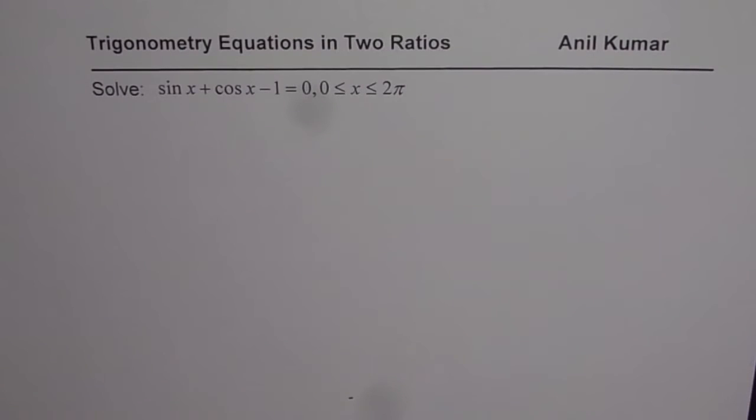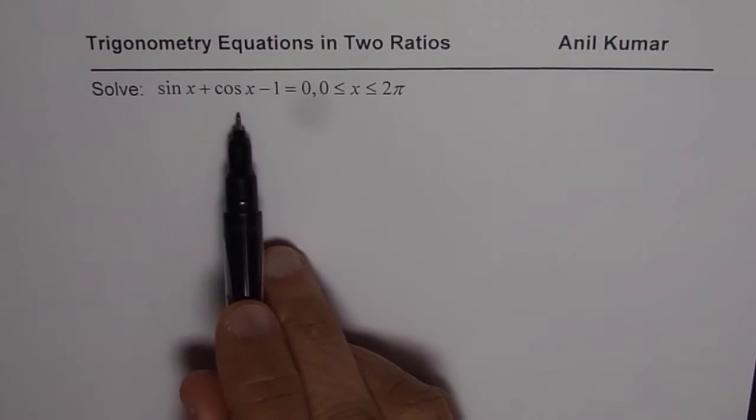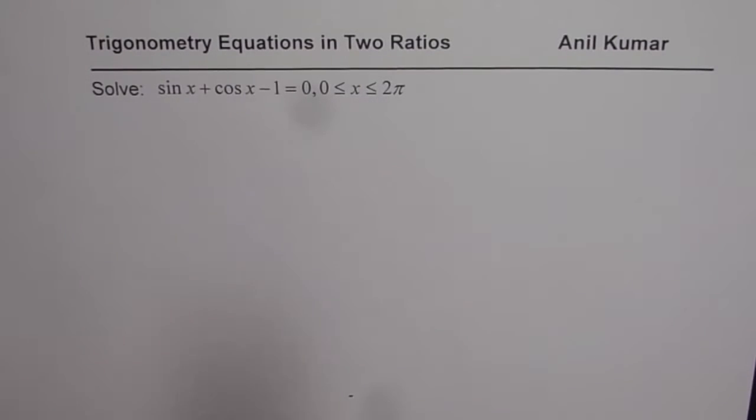I am Anil Kumar and in these set of videos we will consider trigonometric equations where two ratios are involved. So this equation is sin x plus cos x minus 1 equals to 0. We need to solve for x where x is between 0 to 2 pi.